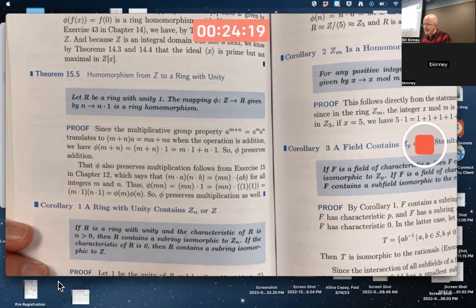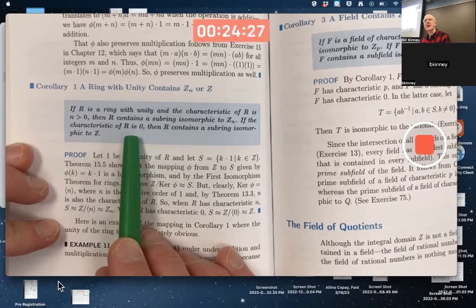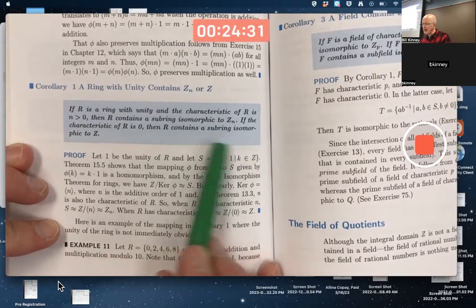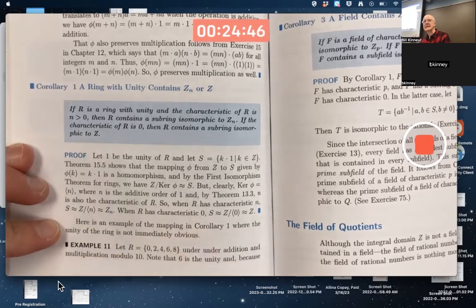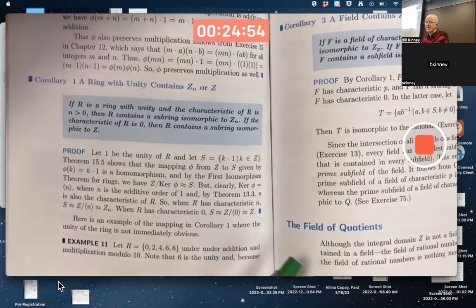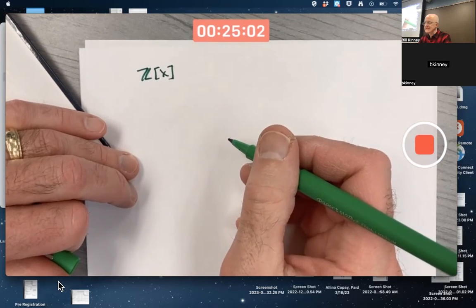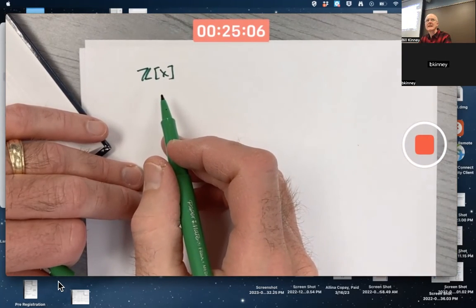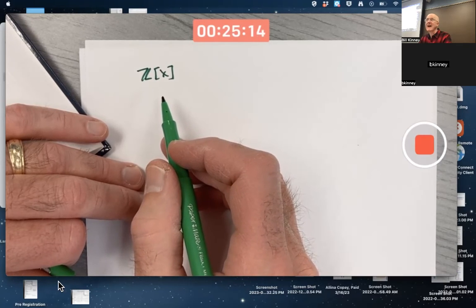And what this means is that the corollary, at least in the case where the characteristic of R is 0, R contains a subring isomorphic to the integers. An arbitrary ring with unity that has a characteristic of 0 contains a subring isomorphic to Z. Z is kind of like a core subring of any ring with unity that has a characteristic of 0. What's an example of such a ring? How about like Z[X]? Z[X], that's the polynomial ring with coefficients in Z.